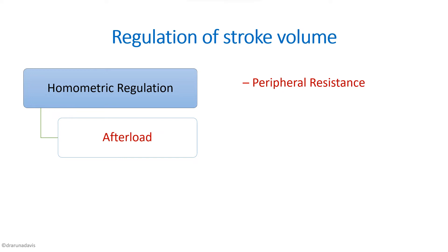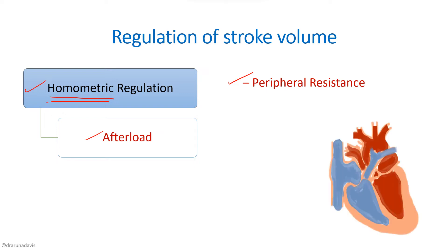The next type is homometric regulation. In this type there is no change in length. Instead, the change is in the afterload — in the case of the heart, that is peripheral resistance. Afterload is the load that acts on the muscle once it starts contracting. If there is an increase in peripheral resistance, there will be a decrease in cardiac output. This is known as homometric regulation.